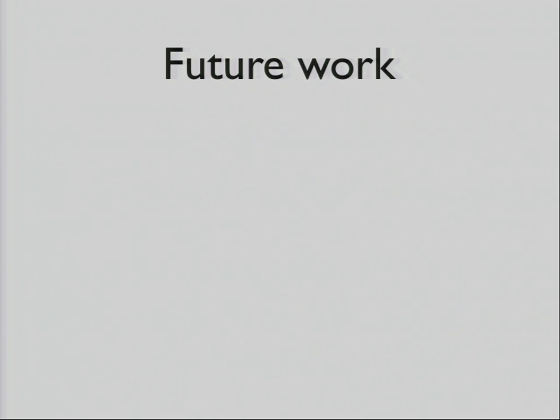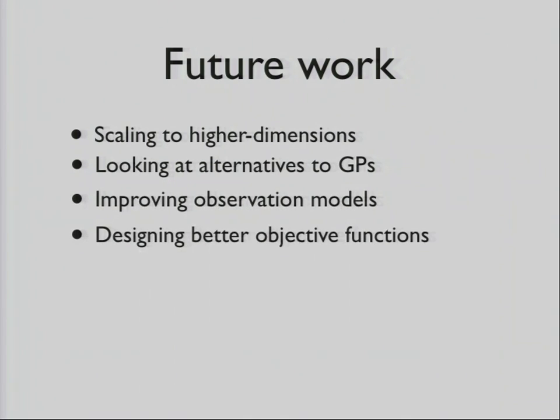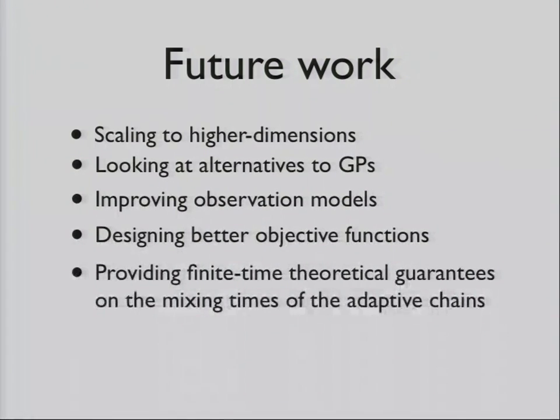For future work, some things that would be nice to do are scaling this to higher dimensions. Right now, the highest dimension we've done is eight dimensions. But we have Bayesian optimization code for doing it up to 50 dimensions. But those are running on random forests. So also, in line with that, looking at alternatives to GPs. Our observation model is pretty simplistic. The same Gaussian and zero-mean noise everywhere, so we could improve that. And the objective function is kind of ugly, so we could probably design a better one. Although it works. And also, it would be nice to kind of provide some kind of guarantees around how long it actually takes to mix.